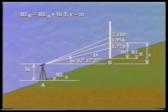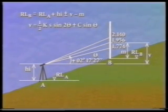In this case, it is positive, and it is obtained from V equals half KS sine 2 theta plus C sine theta. As before, K is usually 100 and C is usually 0. Therefore, the formula simplifies to V equals 50S sine 2 theta.